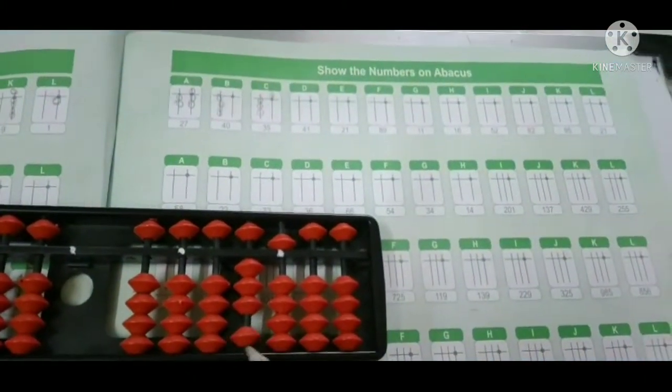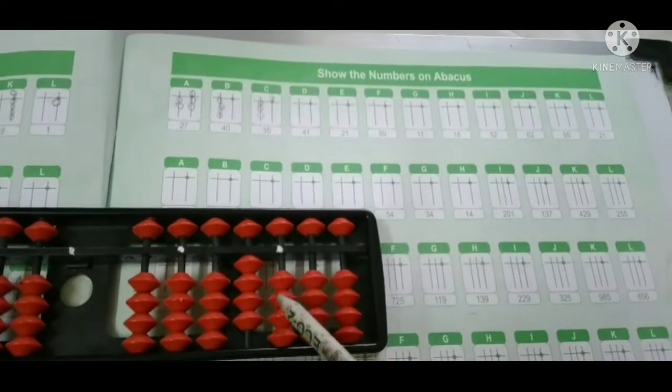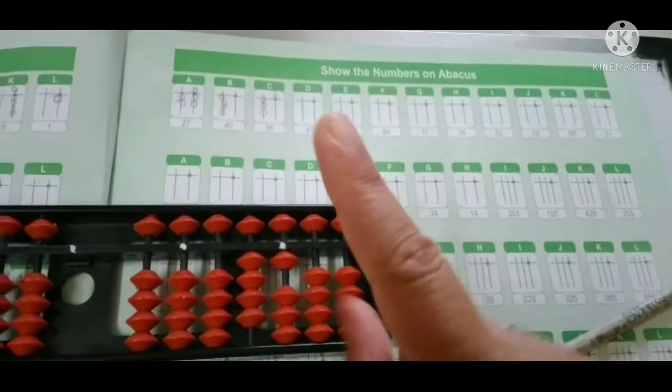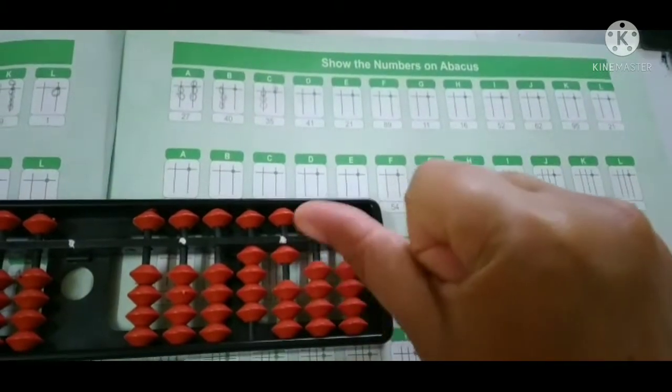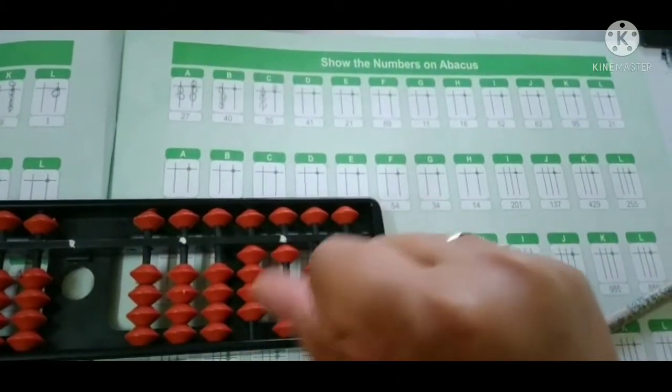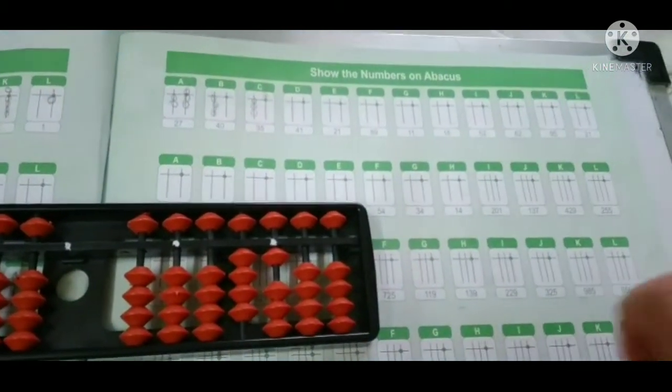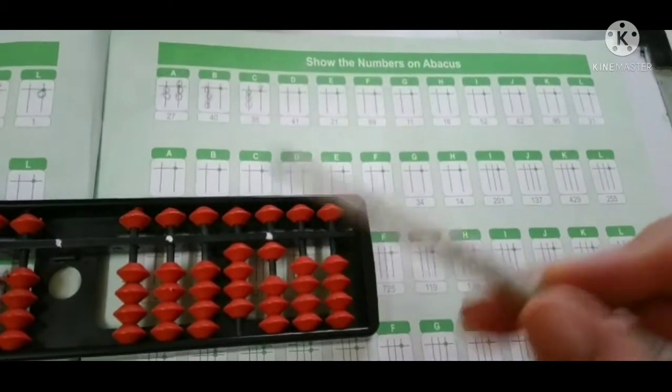Now 41: 40 and this is 1. We use this finger to put this bead down and we use this thumb to put up, okay.